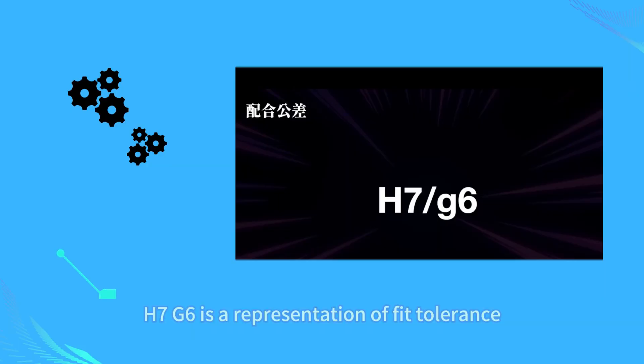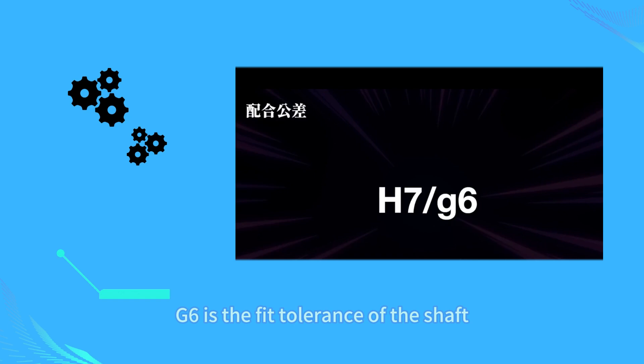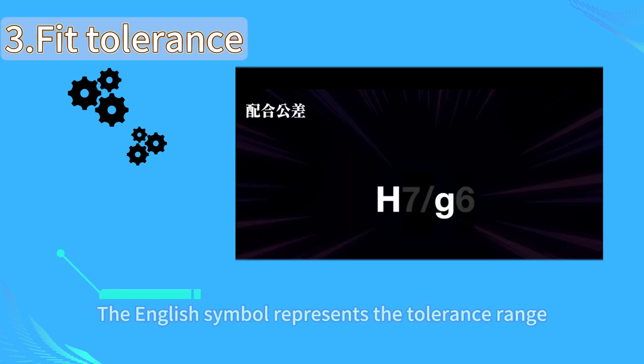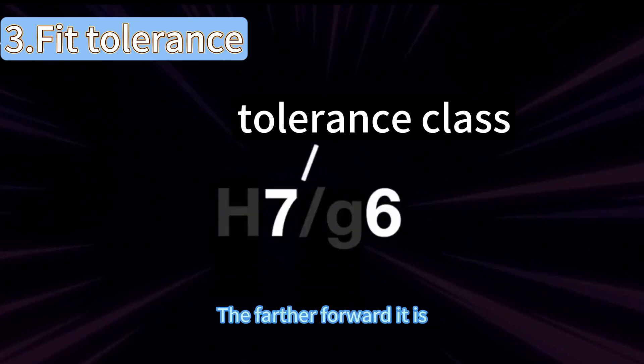G7/g6 is a representation of fit tolerance, where 7 refers to the fit tolerance of the hole and g6 is the fit tolerance of the shaft. The letter symbol represents the tolerance range. Generally table lookup and comparison are required.